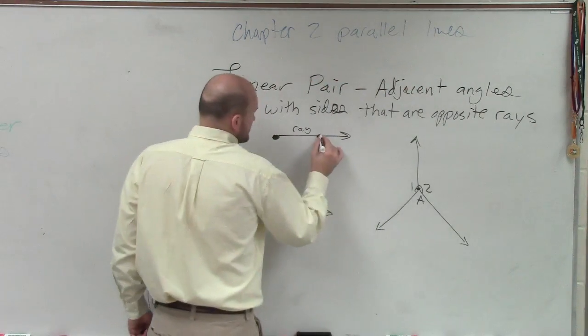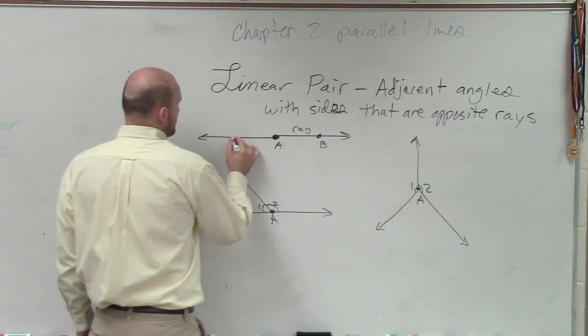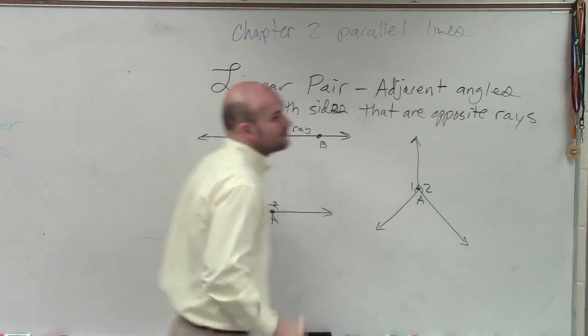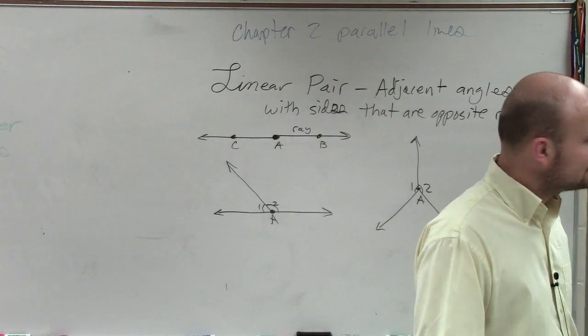So what that means is, if here's A, here's B, if I have a ray over here, that means point C also has to be on the same line. So opposite rays are collinear. What that means, Keith, is they create a line.